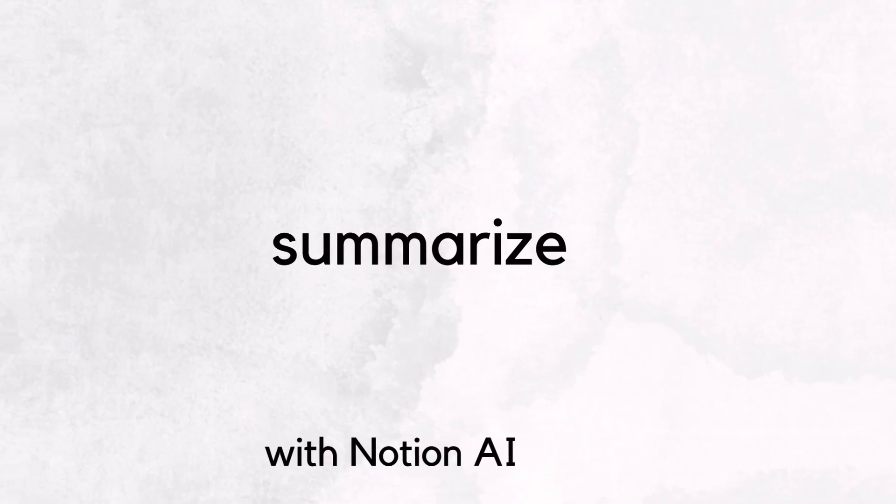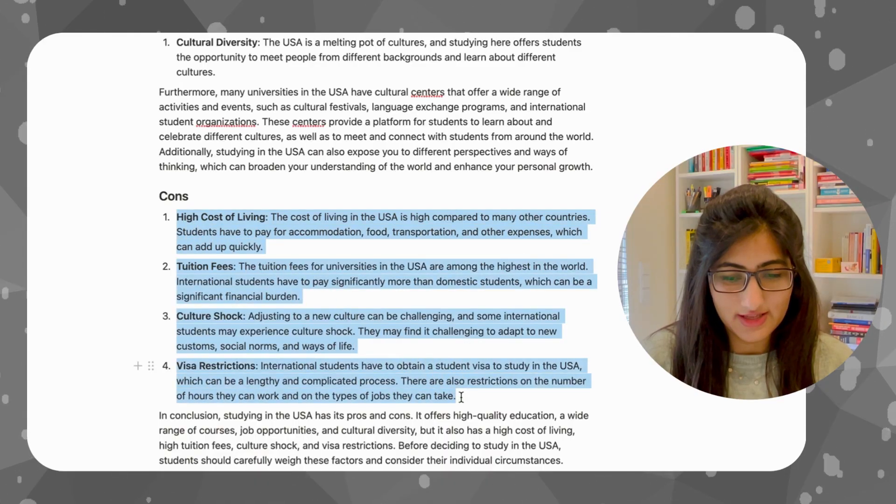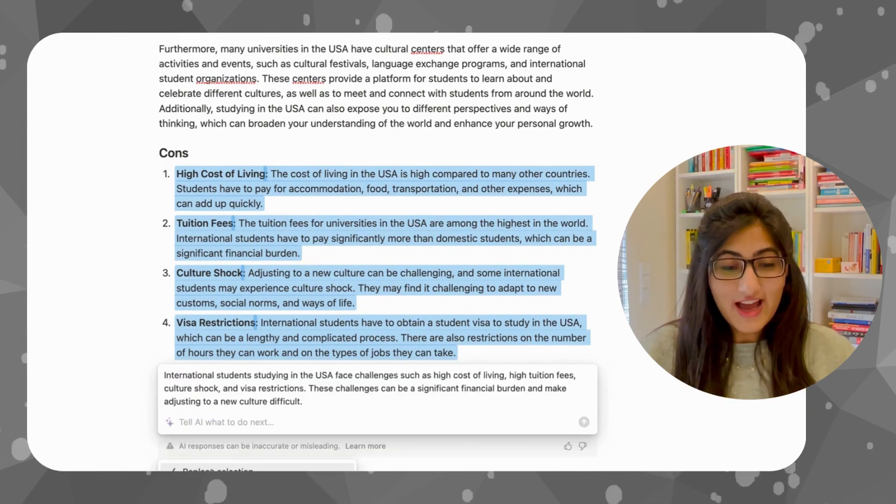Another feature I want to show is summarizing. I'm going to highlight this and ask AI to summarize it for me. It has given me all four points in just three lines. This will be super helpful if you have a lot of reading to do and don't have time — you paste it here and ask AI to summarize it. This was a very brief introduction to Notion AI and how a student can use it for writing, editing, and reviewing.